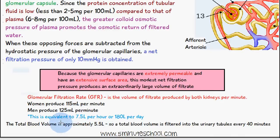This is equivalent to about 7.5 liters per hour or 180 liters per day. The total blood volume is approximately 5.5 liters so the total blood volume is filtered into the urinary tubules every 40 minutes approximately.